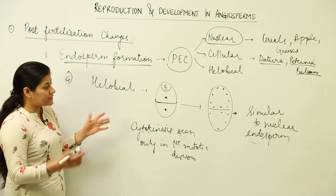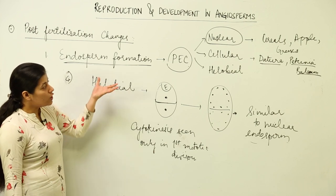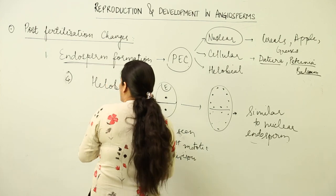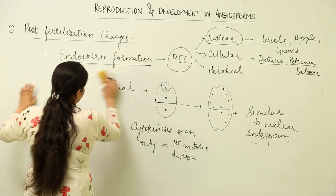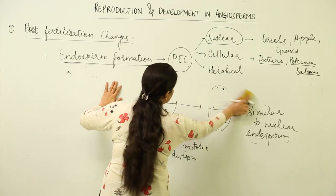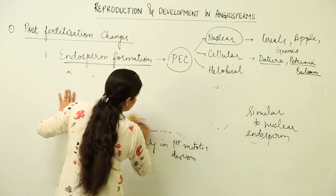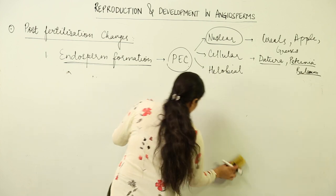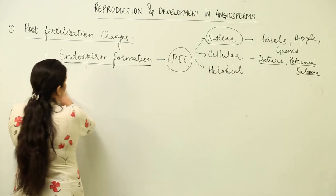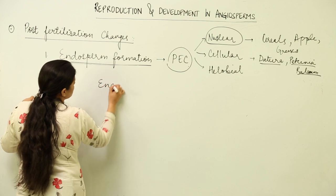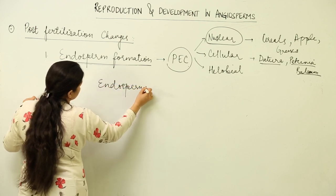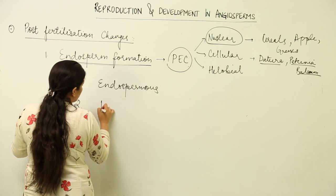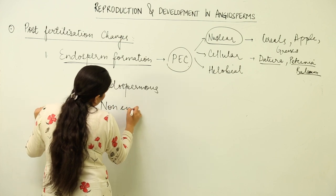To summarize endosperm formation: we have three types — nuclear, cellular, and helobial. To wrap up the chapter, there are two additional terms to remember: endospermous seeds, otherwise known as albuminous seeds, and non-endospermous seeds.